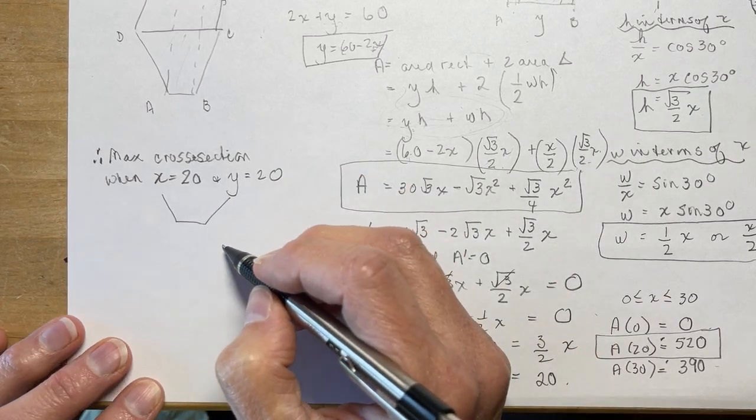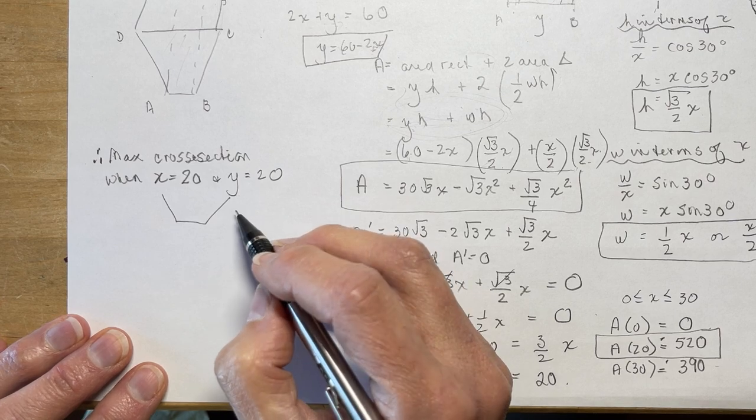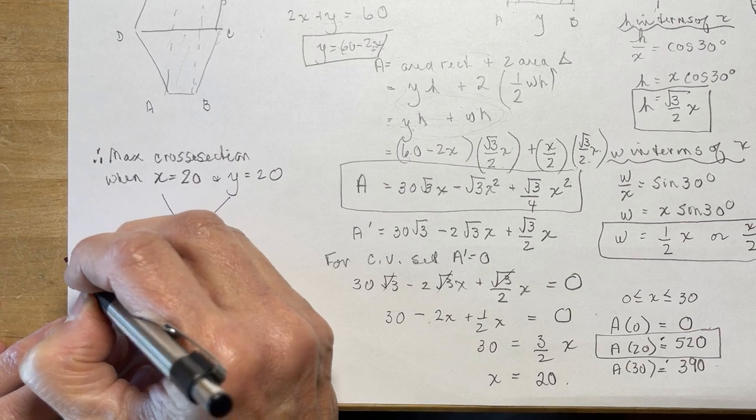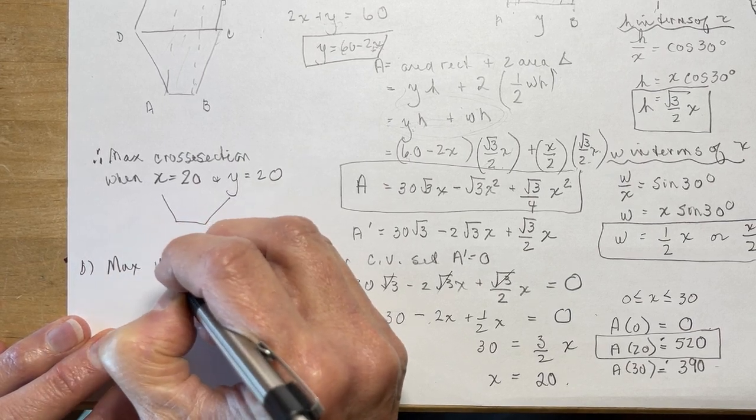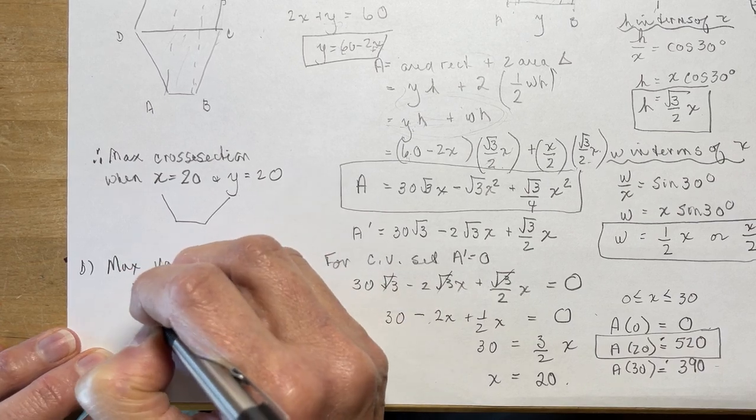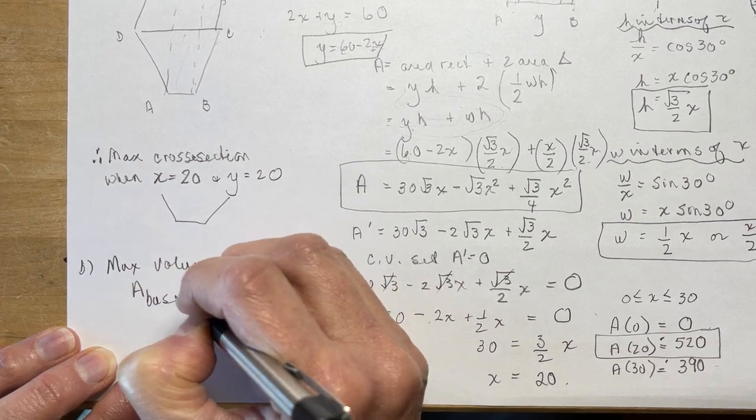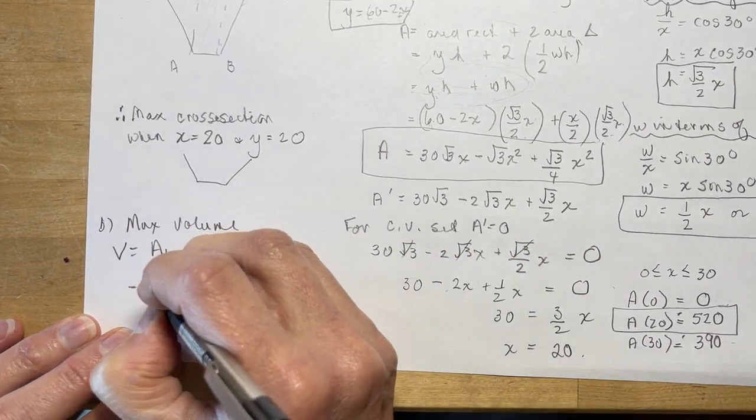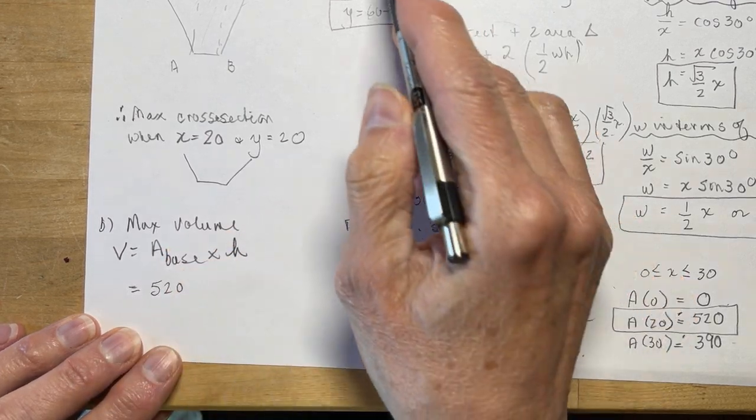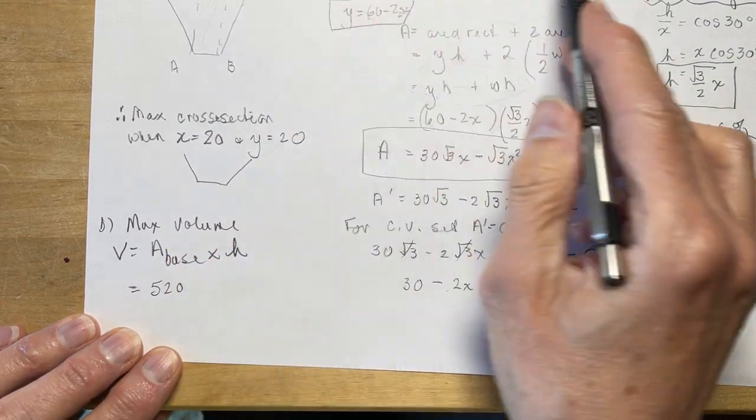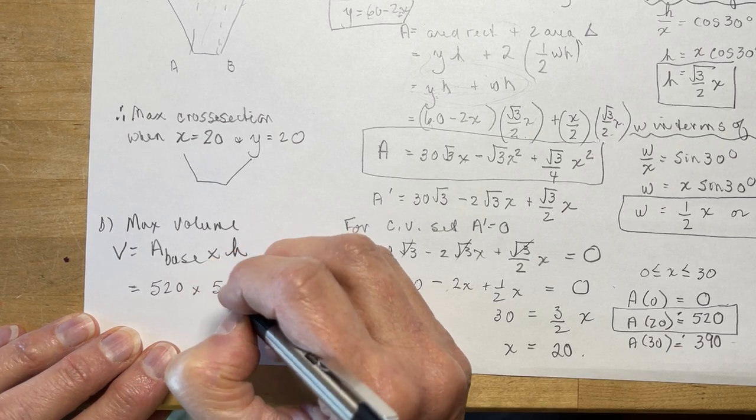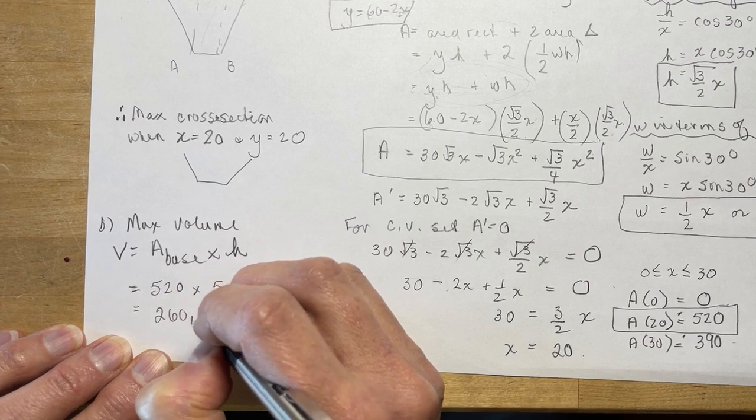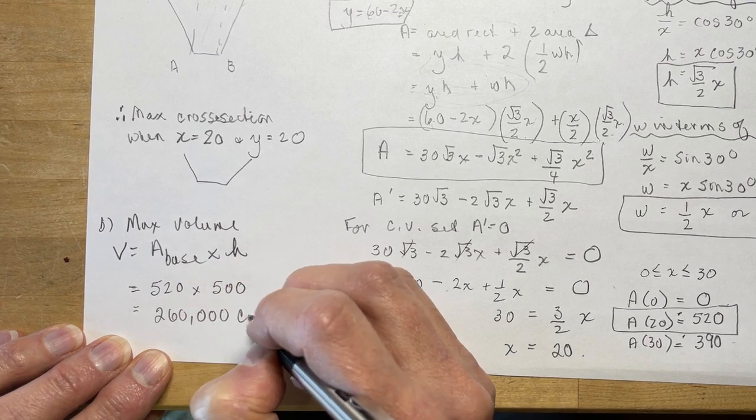Now part b of the question wants to know what is the maximum volume. So the volume is going to be the area of the base times the height. The area of the base we found was 520, and this is where you have to make sure that you've converted your 5 meters of length to 500 centimeters. And that's going to give you 260,000 cubic centimeters.